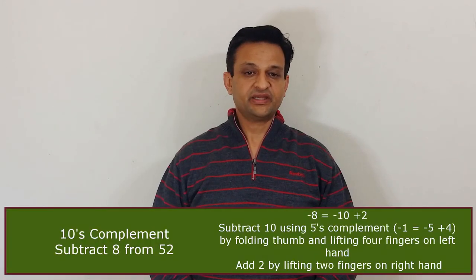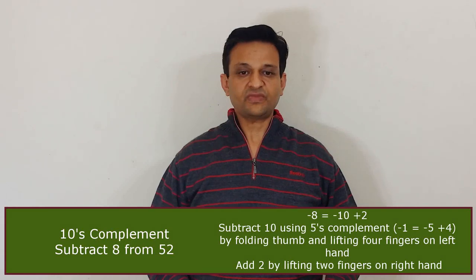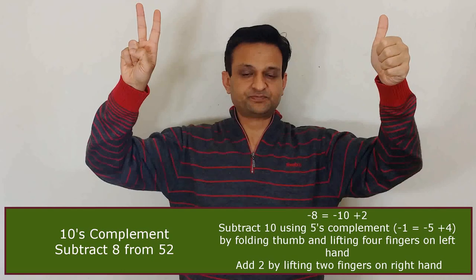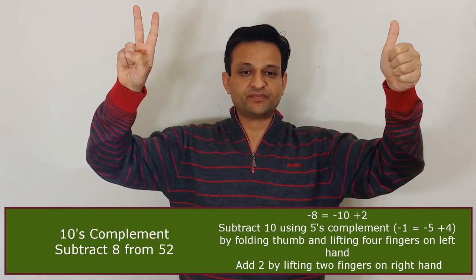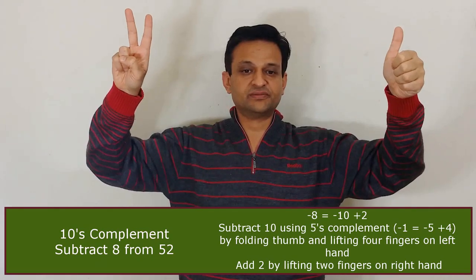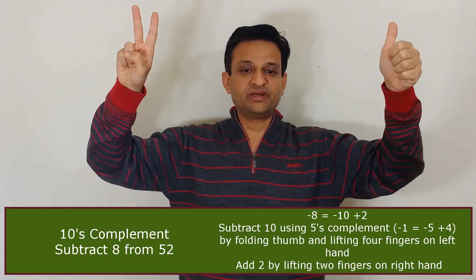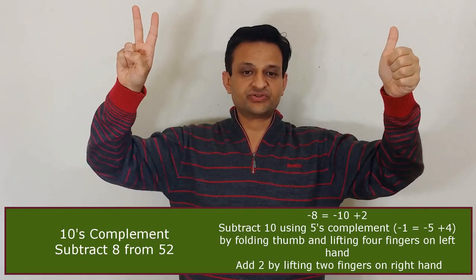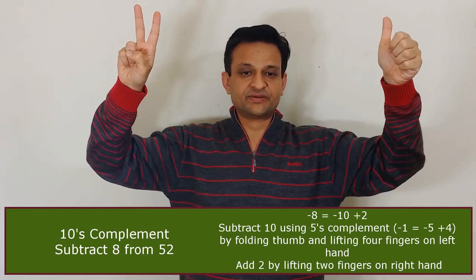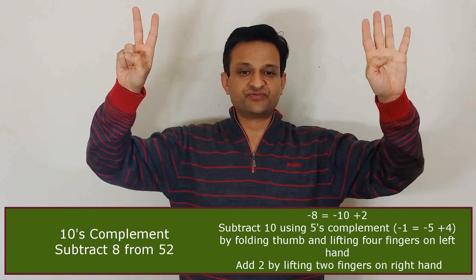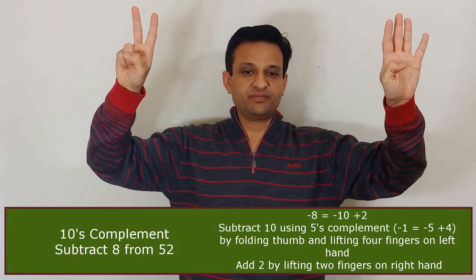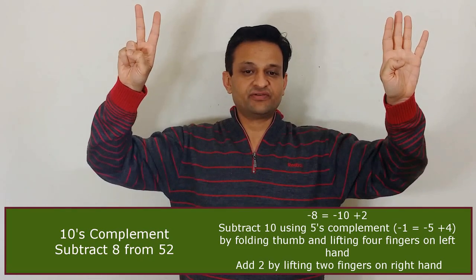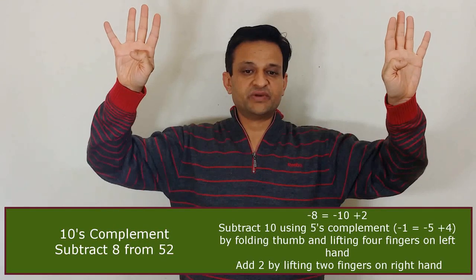Next, consider subtracting 8 from 52. We represent 52 as a thumb on the left hand side and 2 fingers. To subtract 8 using 10's complement, we reduce 1 from the left hand side: we fold the thumb and raise 4 fingers using 5's complement. Then we add 2 on the right hand side by raising 2 fingers. The answer becomes 44.